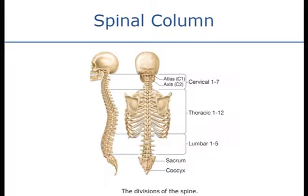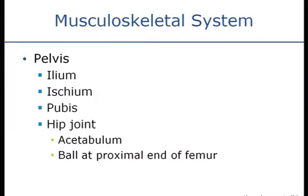You have seven cervical vertebrae, twelve thoracic vertebrae that correspond to the twelve ribs, and five lumbar vertebrae. Then you have a sacrum and the coccyx. The sacrum consists of vertebrae that are fused together, as well as the coccyx or tailbone, which is also fused together. The spinal cord does not run all the way down to the sacrum — it exits at the lumbar region into a large fan of nerves known as the cauda equina, which services the pelvis and the lower extremities.